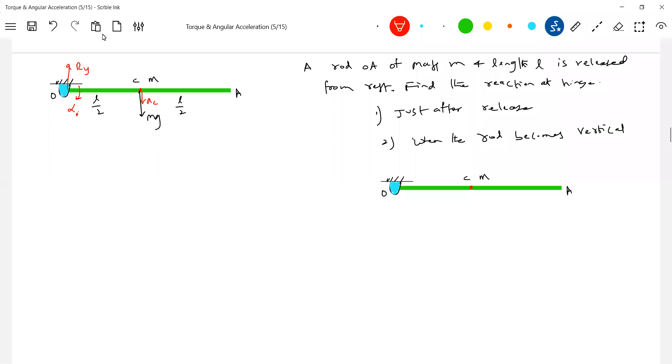Let's write first torque equation. Mg into torque about oh should be equal to IO into alpha o. Torque about oh will be mg into l by 2. Moment of inertia ml square by 3 into alpha o. So what is alpha o? 3g by 2l.